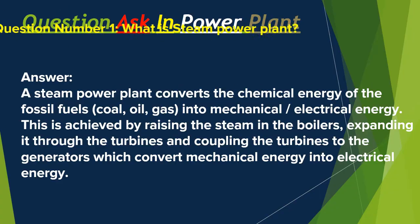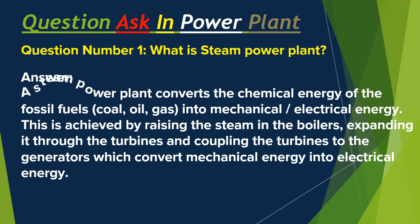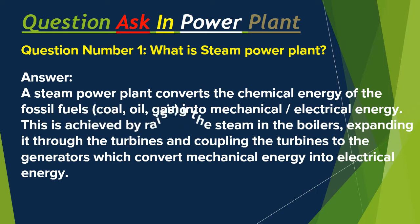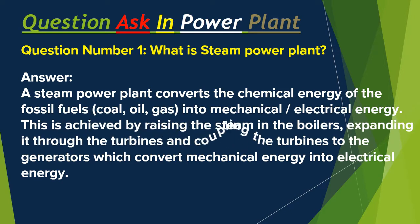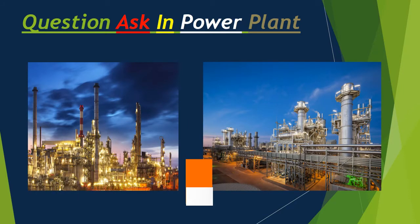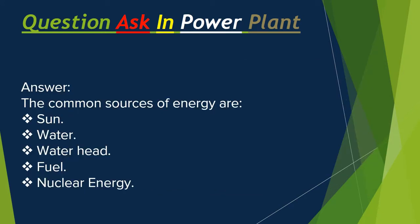Question number one: What is a steam power plant? Answer: A steam power plant converts the chemical energy of fossil fuels — coal, oil, gas — into mechanical and electrical energy. This is achieved by raising steam in the boilers, expanding it through the turbines, and coupling the turbines to the generators which convert mechanical energy into electrical energy.